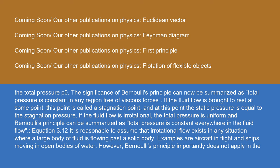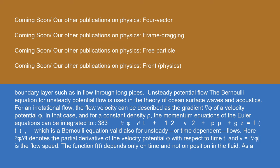The significance of Bernoulli's principle can be summarized as: total pressure is constant in any region free of viscous forces. If the fluid flow is irrotational, the total pressure is uniform and Bernoulli's principle can be summarized as: total pressure is constant everywhere in the fluid flow. It is reasonable to assume that irrotational flow exists in any situation where a large body of fluid is flowing past a solid body — examples are aircraft in flight and ships moving in open bodies of water. However, Bernoulli's principle importantly does not apply in the boundary layers, such as in flow through long pipes.